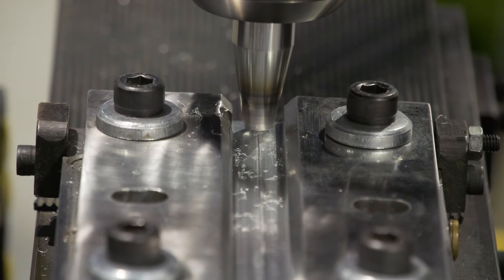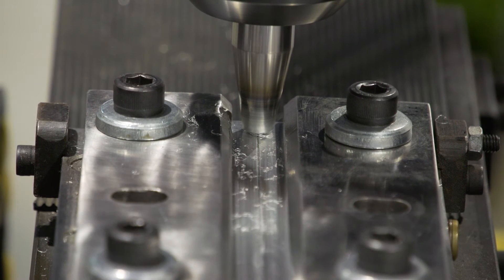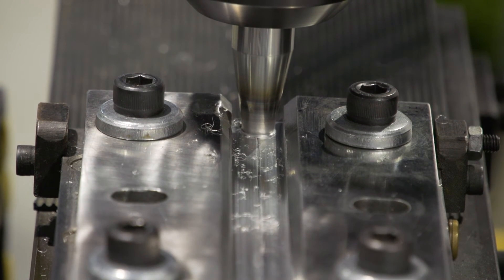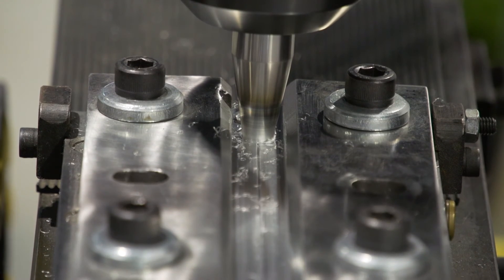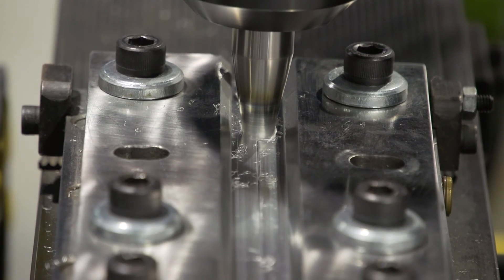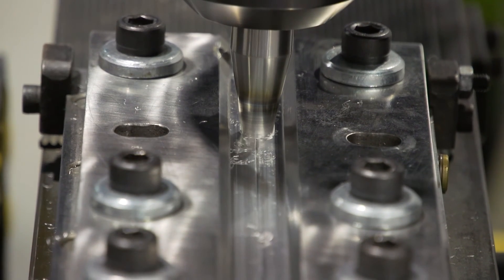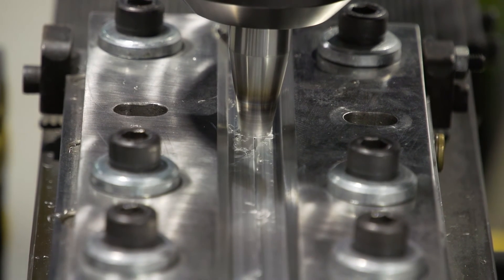So here we're going to do a simple butt joint in 6,000 series aluminum. This will show you the ease of friction stir welding in the green process. We don't have any shielding gas or filler metal. Therefore, we're not putting out any fumes that need to be extracted.